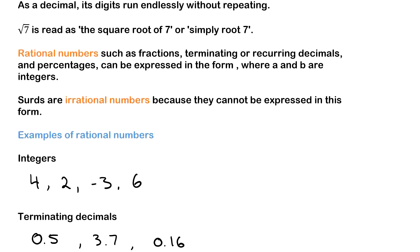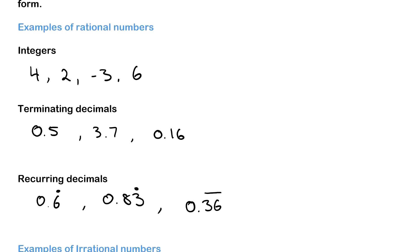Let's look at some examples of rational numbers. On screen we have integers, which are whole numbers: four, two, negative three, six. We then have terminating decimals such as 0.5, 3.7, and 0.16 — these are decimals that end. We also have recurring decimals where there is a pattern, such as 0.6 repeating, which is 0.666666..., and we have 0.83 repeating and 0.36 where the 36 is repeated.